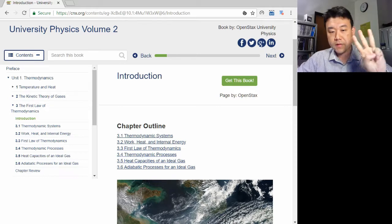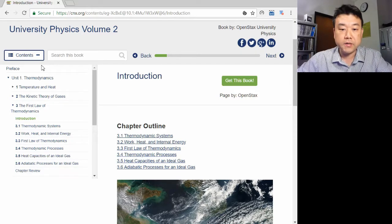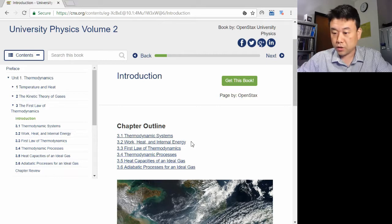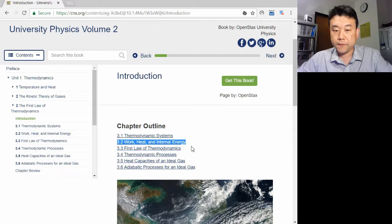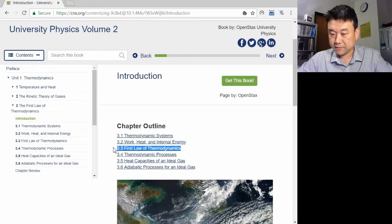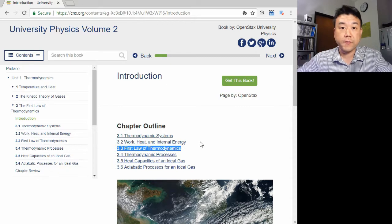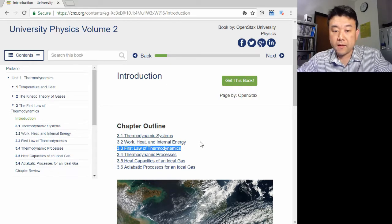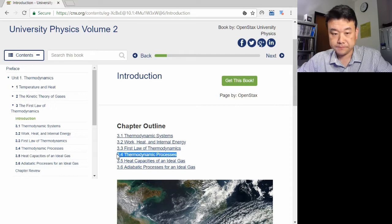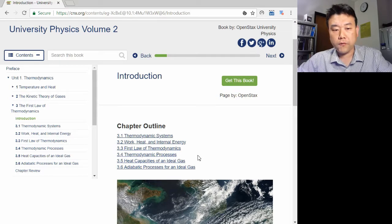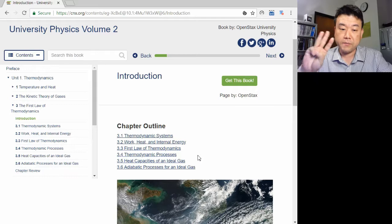There are three important pieces covered in Chapter 3. They are mechanical description of work in working with gas, the first law of thermodynamics, which relates the internal energy to heat transfer and work done, and a few important thermodynamic processes. We will briefly go over each of these three important pieces.